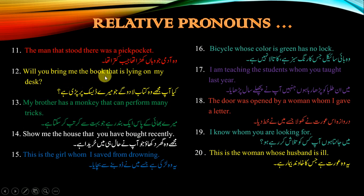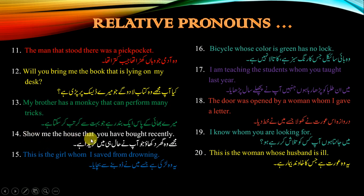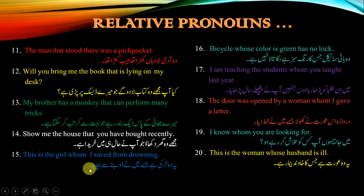Will you bring me the book that is lying on my desk? کیا آپ مجھے وہ کتاب لا دوگے جو میرے desk پر پڑی ہے؟ My brother has a monkey that can perform many tricks. میرے بھائی کے پاس ایک بندر ہے جو بہت سے کرتب کر سکتا ہے۔ Show me the house that you have bought recently. مجھے وہ گھر دکھاؤ جو آپ نے حال ہی میں خریدا ہے۔ This is the girl whom I saved from drowning. یہ وہ لڑکی ہے جسے میں نے ڈوبنے سے بچایا۔ The bicycle whose colour is green has no lock. وہ bicycle جس کا رنگ سبز ہے تالہ نہیں ہے۔